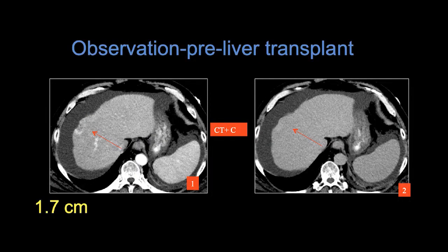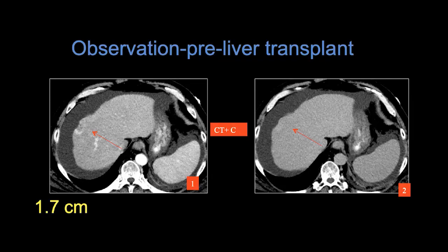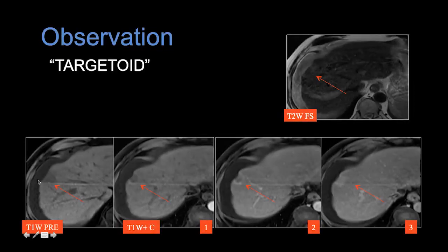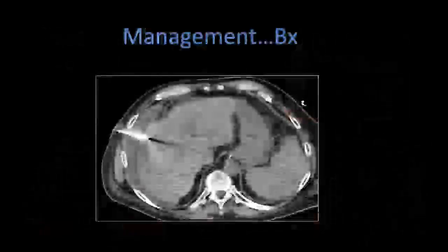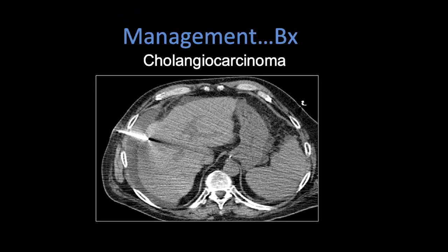Here's a case: a patient with cirrhosis and ascites. We have a rim-enhancing lesion within the cirrhotic liver. Notice there's capsular retraction and progressive enhancement — this is not diagnostic of HCC. On MRI, we see a targetoid appearance on T2, rim-like enhancement on the arterial phase with progressive enhancement, and capsular retraction. This does not meet the imaging features of HCC. The patient ended up getting a biopsy at our recommendation, and this ended up being, as expected, a cholangiocarcinoma.